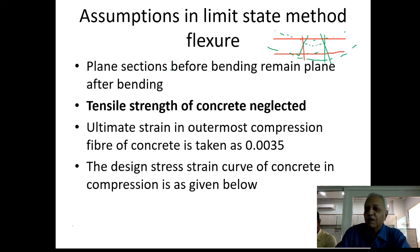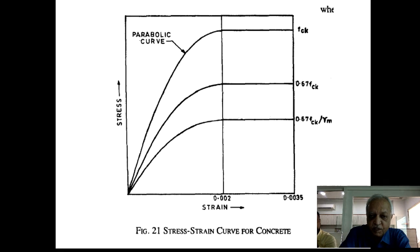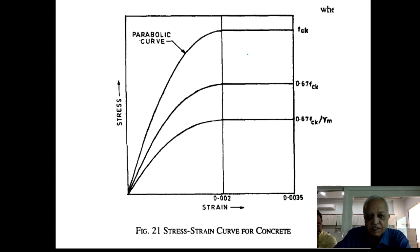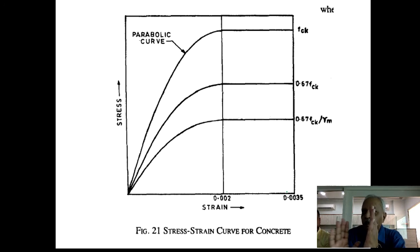The ultimate strain in the outermost fiber in compression is limited to 0.0035. The stress-strain curve for concrete has an almost straight portion, then it flattens out. From the strain of 0.002 up to the maximum strain of 0.0035, the concrete deforms without change in stress — there is a flat portion in this region. Between these two strains, the concrete will only deform but the stress remains the same.